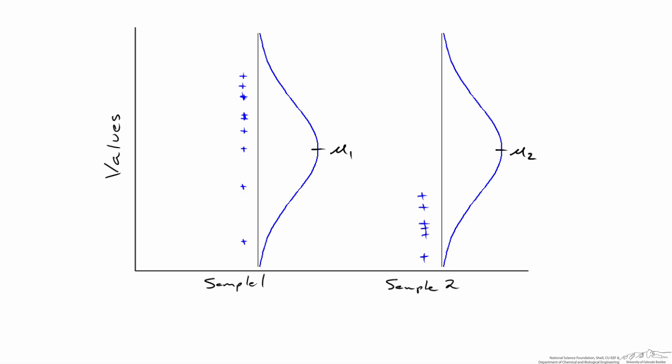But when we look at the data alone, it sure looks like the new refrigeration unit does a better job than the old one. In the language of statistics, we would say the null hypothesis is that the old refrigeration unit, the average temperature from the old refrigeration unit is equal to the average temperature of the new refrigeration unit, the alternate hypothesis is that their means are different.